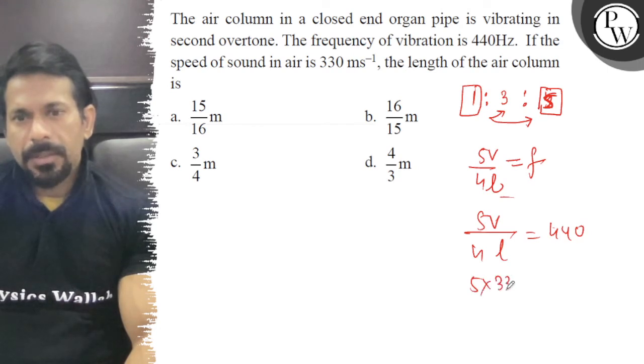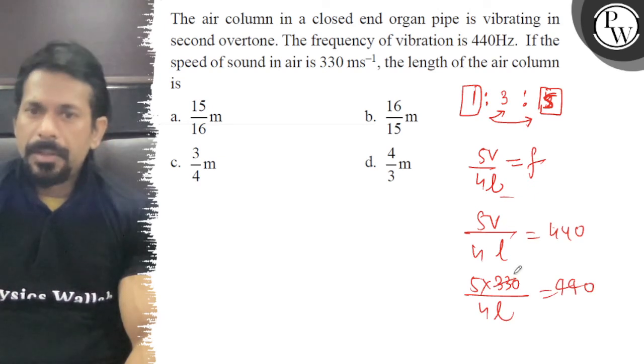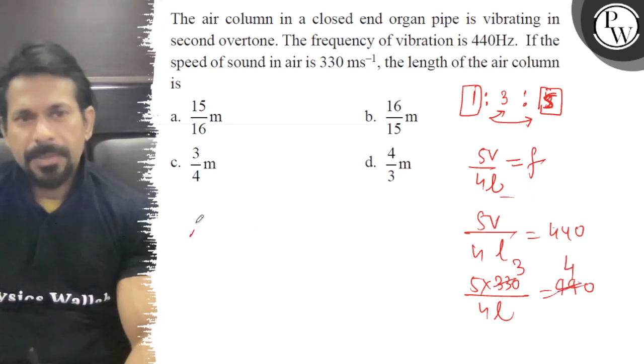So 5 times 330 divided by 4L equals 440. Simplifying, that's 11 times 3 over 11 times 4. Therefore, L is 15/16 m.